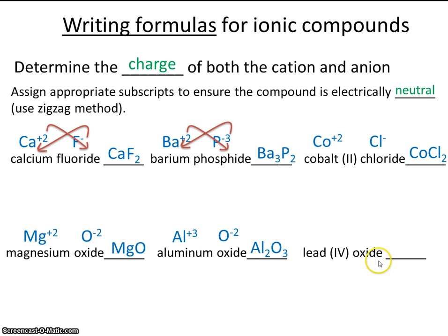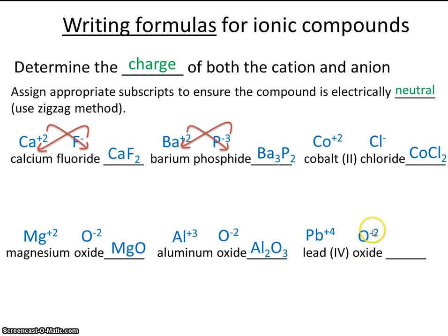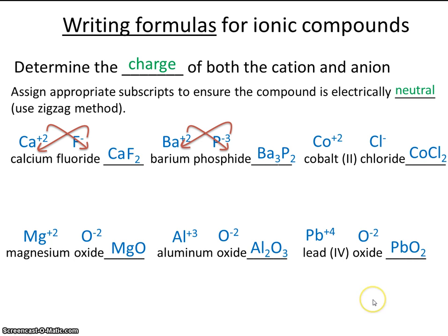Now let's do lead 4 oxide. Lead 4 doesn't tell us there are 4 leads — it tells us the charge on lead, which is plus 4. The charge on oxide is always minus 2. When we zigzag, you might expect subscripts of 2 and 4, but remember this represents a ratio of lead to oxide. So we can reduce 4 and 2 to 2 and 1, and the formula should be written as PbO2.